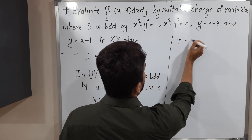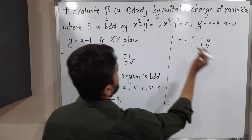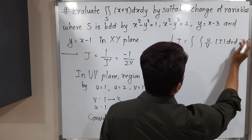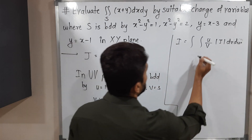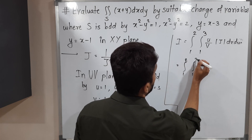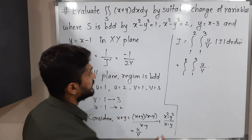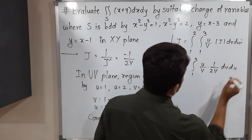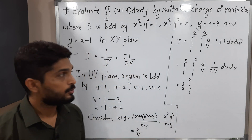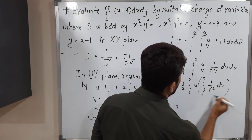Now we set up the integral in uv-coordinates. I = ∬ (x + y) dx dy = ∬ (u/v) · |J| dv du. With |J| = 1/(2v), this becomes the integral from 1 to 2 and 1 to 3 of (u/v) · (1/(2v)) dv du = (1/2) ∫₁² u · ∫₁³ v⁻² dv du.